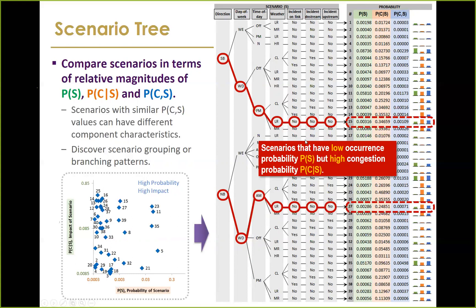These rare but high-impact scenarios involve light rain during southbound weekday PM peak, or northbound weekday AM peak with light rain. Because rain is not very frequent overall — as seen in the marginal distribution — such scenarios are uncommon, but when they occur the probability of congestion is very high.